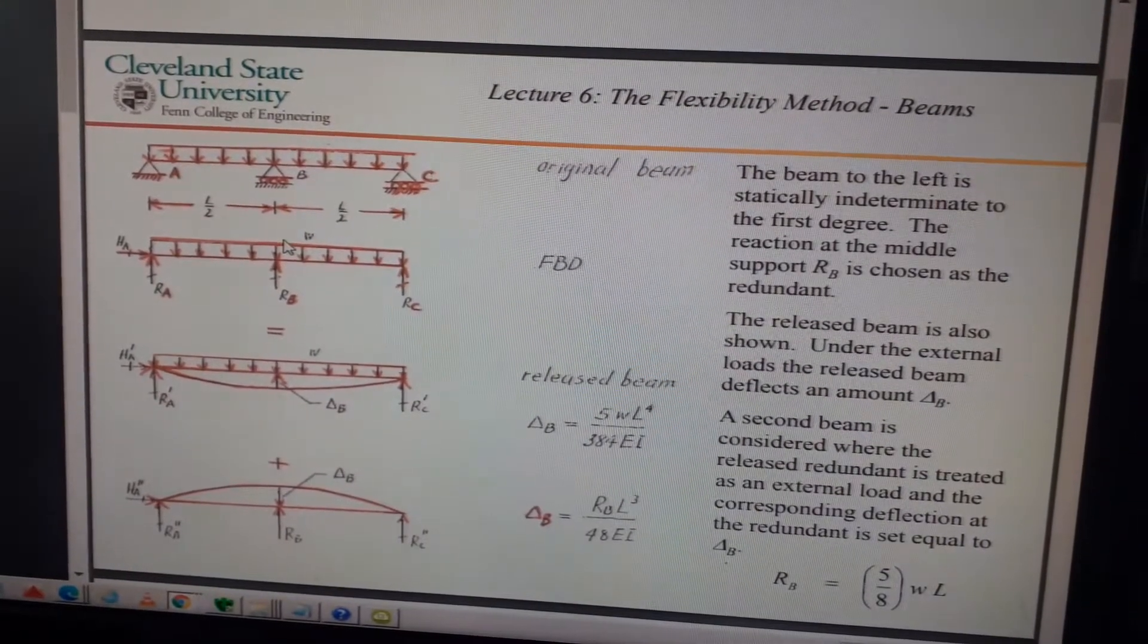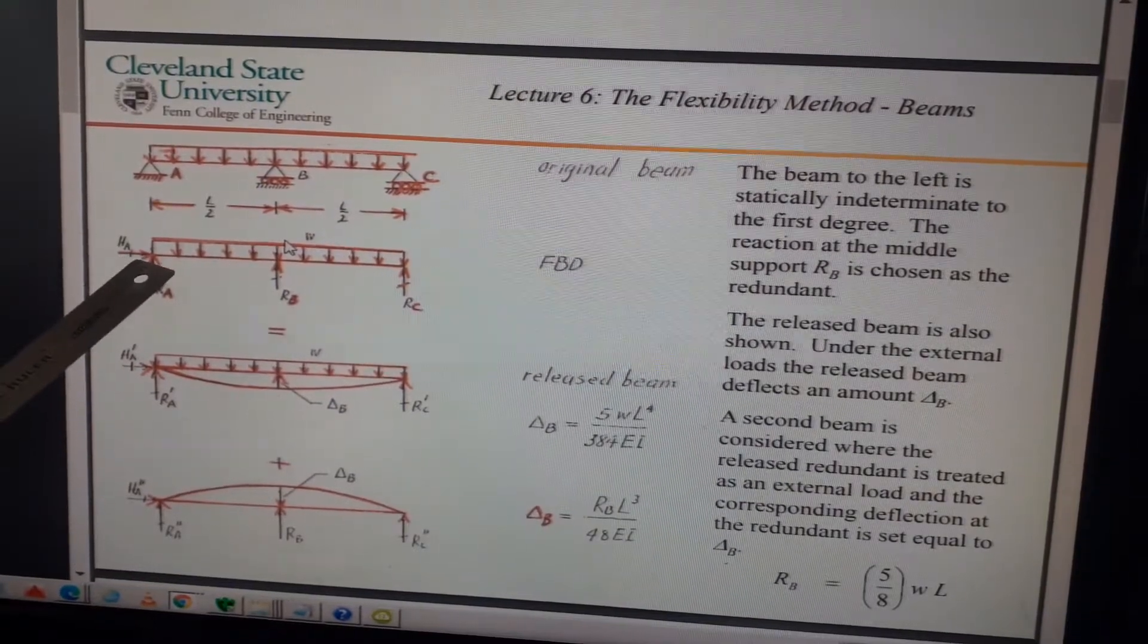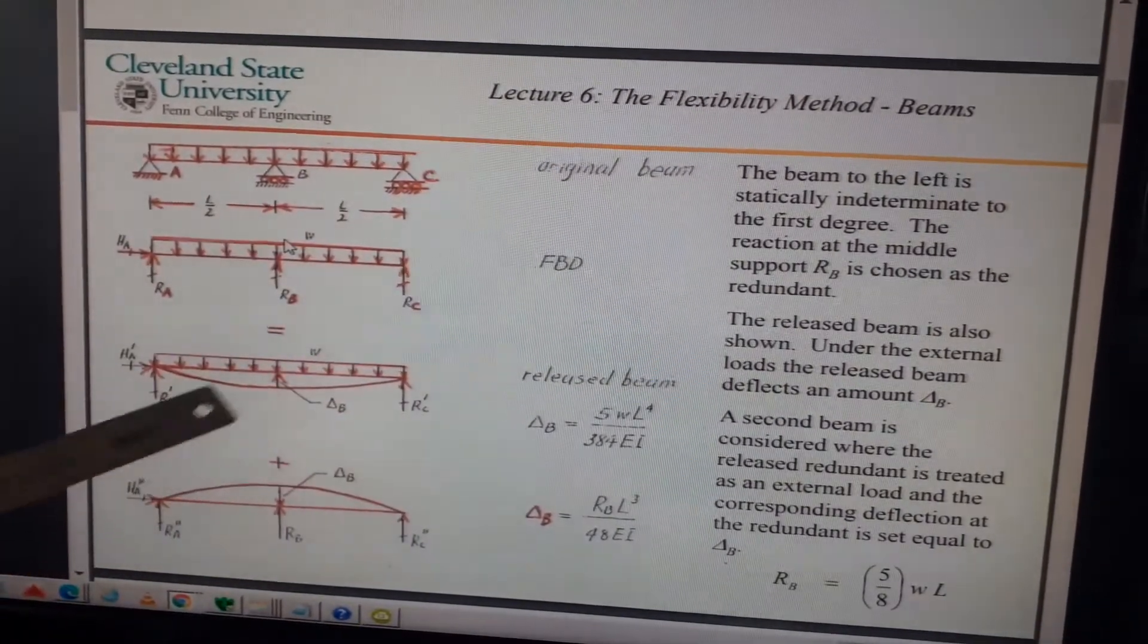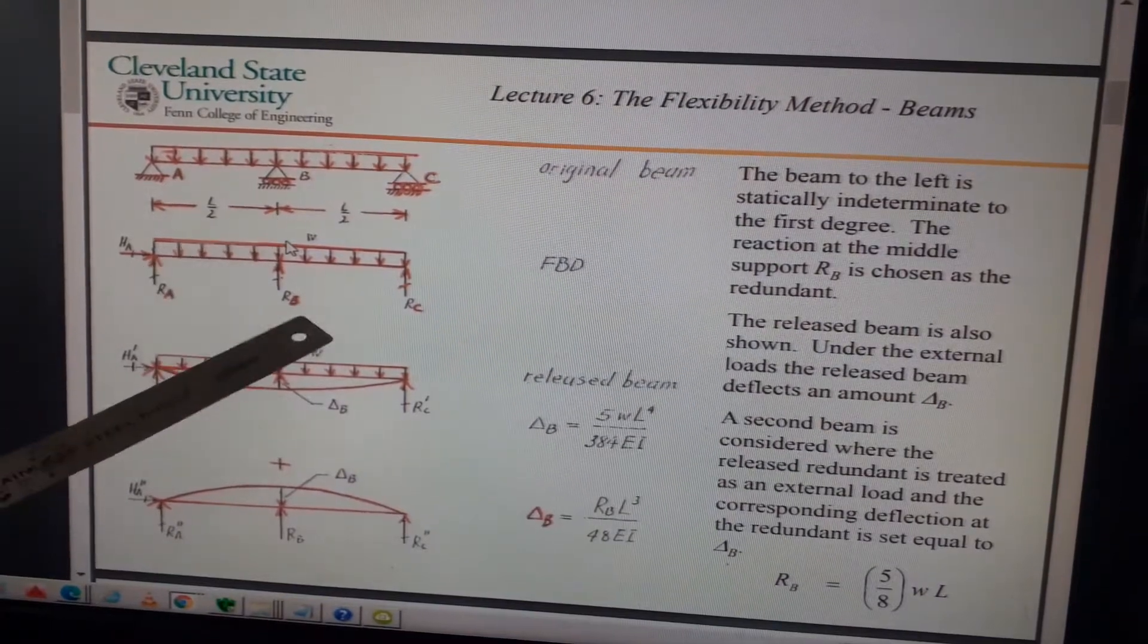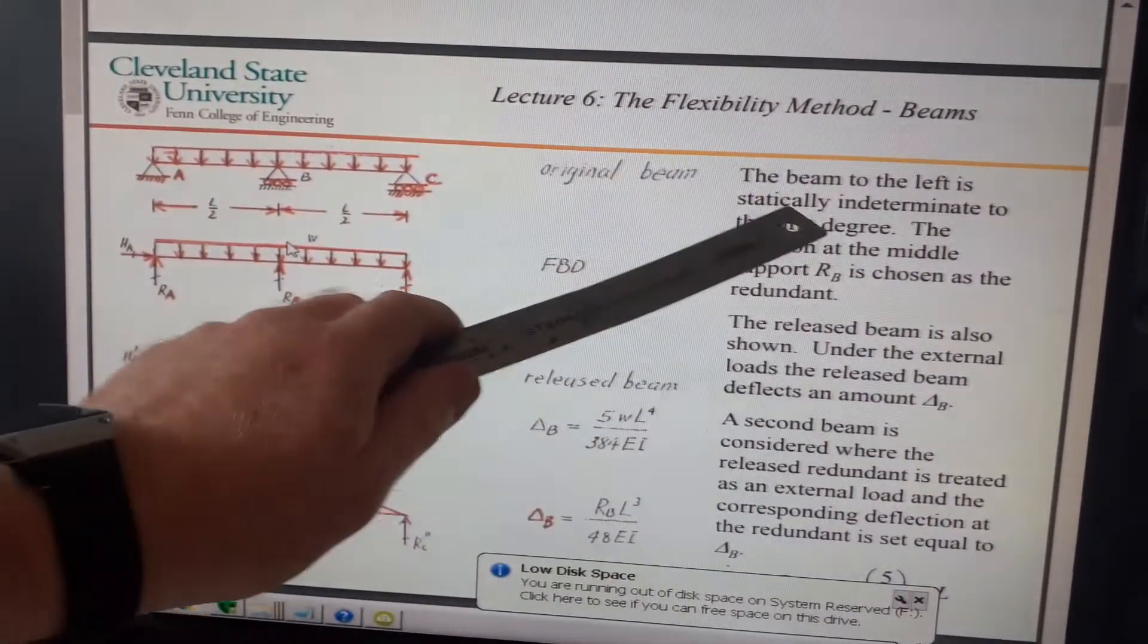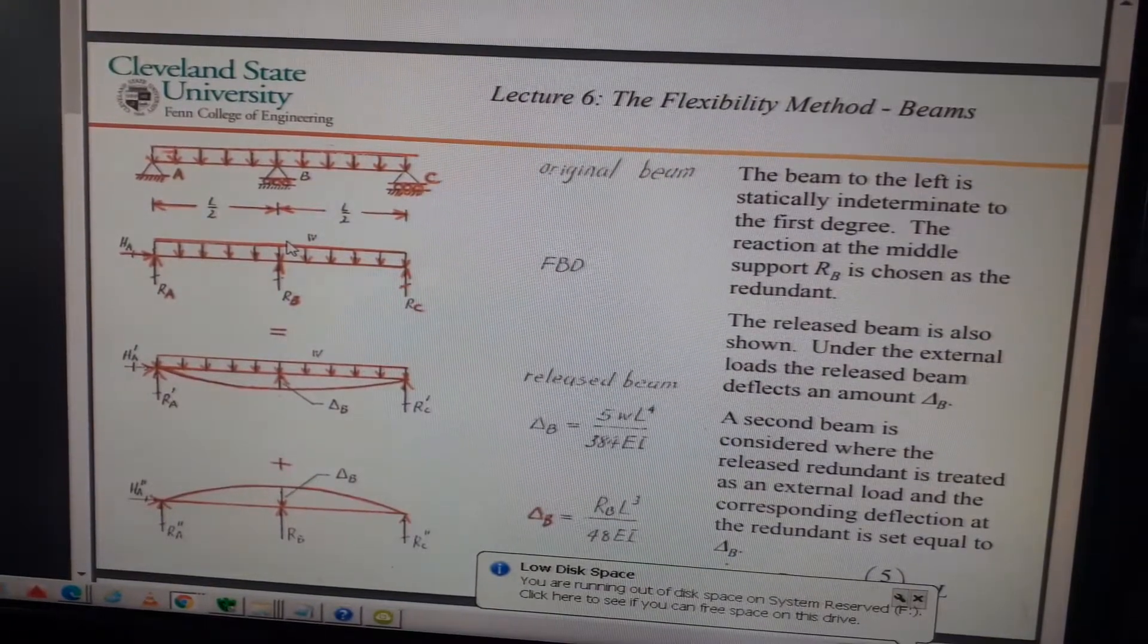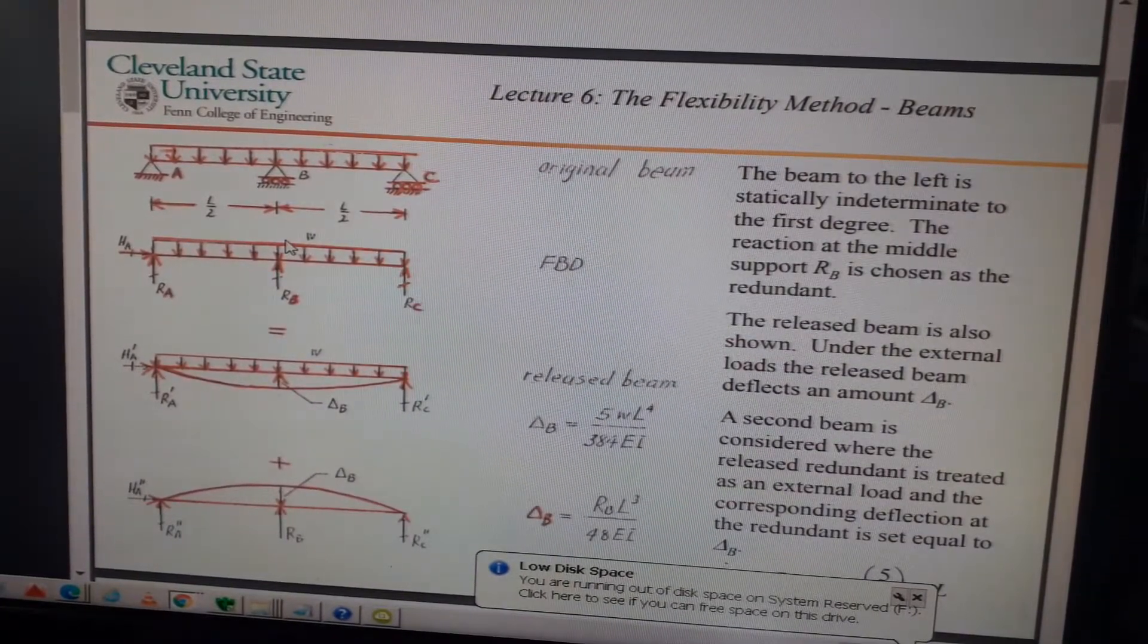What you've got to remember as well from overall equilibrium, we have three equations of equilibrium: vertical equilibrium, horizontal equilibrium, and moments. So HA should in theory be zero because there's no other horizontal forces, but they've still drawn it in. So anyway, I'll just go through. This is the arrangement to start with. Original beam: The beam to the left is statically indeterminate to the first degree because we've got three equations but we got one, two, three, four reactions: HA, RA, RB, and RC.